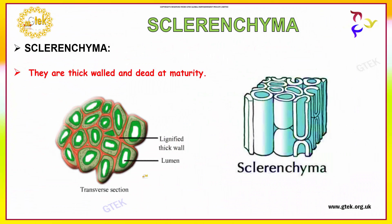Now let us see about sclerenchyma. Sclerenchyma also has thick walls, but they are dead at maturity. You can see the sclerenchyma depicted here — it has a lignified thick wall. This inner space is called the lumen.